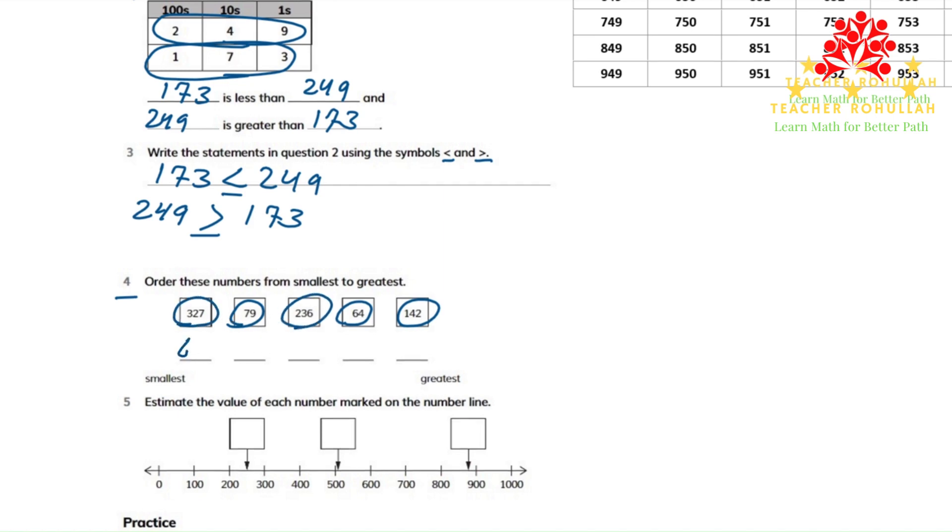So 64 comes here because we are asked to order from smallest to biggest. 79 comes in the second place, 142 is coming in the third place, 236 is fourth, and the biggest one is 327.